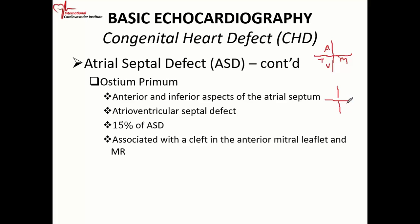One important feature of endocardial cushion defect: normally the tricuspid valve is located lower in the ventricle than the mitral valve, which allows us to identify the right side of the heart. With endocardial cushion defect, that is not true — the AV valves are on the same plane. So if you're doing a study and the AV valves look like they're on the same plane, you might be dealing with an endocardial cushion defect, especially if the patient has an ostium primum ASD or a VSD.